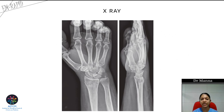On the AP view X-ray, the fracture line can be seen going across, and on the lateral view the dorsal tilt is clearly visible.